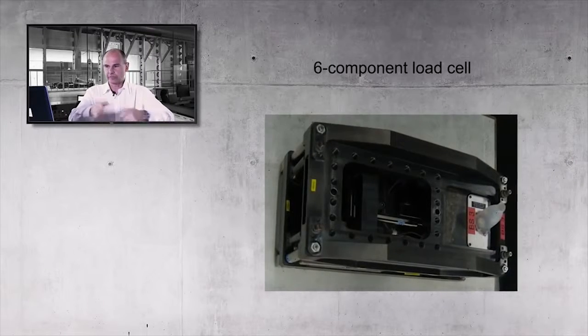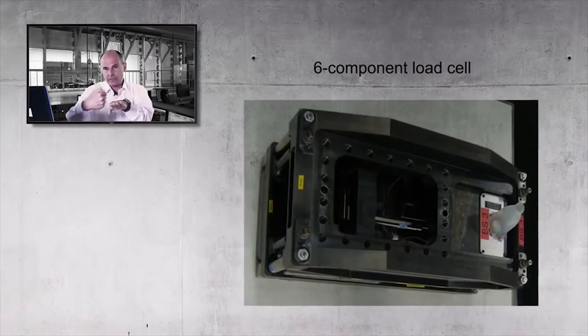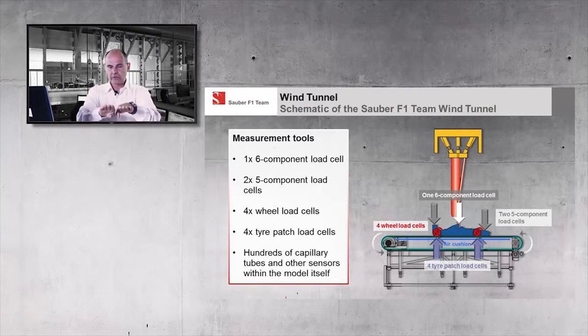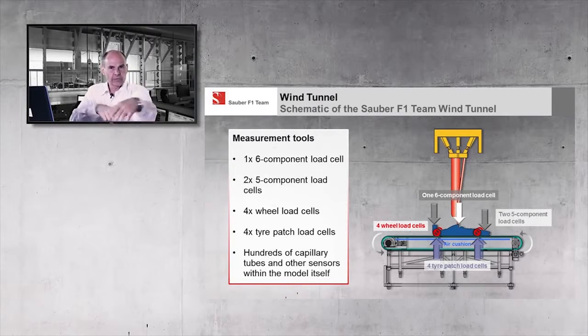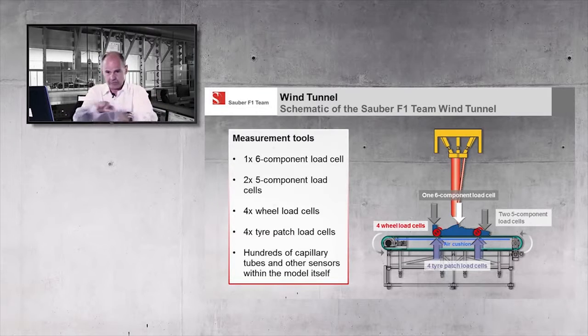In the model, we have a lot of these load cells. The main one we use is a six-component load cell for measuring the overall forces on the car. We want to measure, for example, the downforce on the car, the side force exerted on the car, and the drag force on the car. But we also want to know where the downforce is — how much is on the front, how much is on the rear. So you use a pitch moment, separating that out by having a load cell at the front and a load cell at the rear of your six-component balance, so you can calculate the downforce on the front and on the rear. The same applies for side force, drag force, and moment. That's why six components.